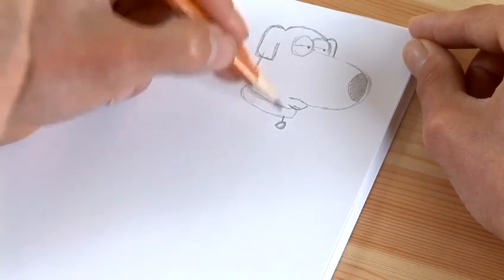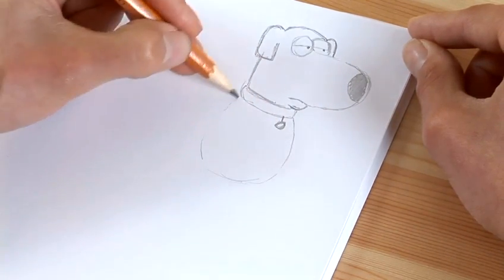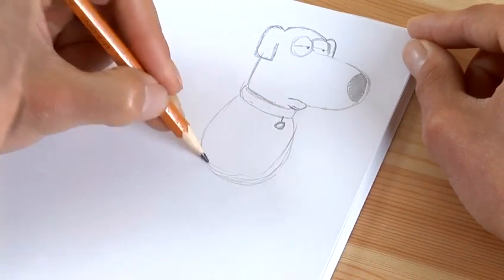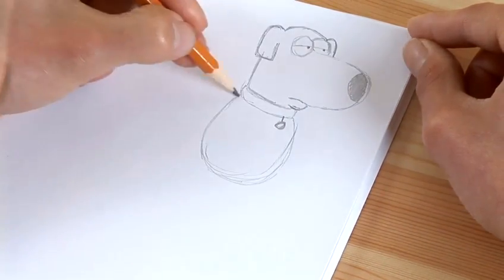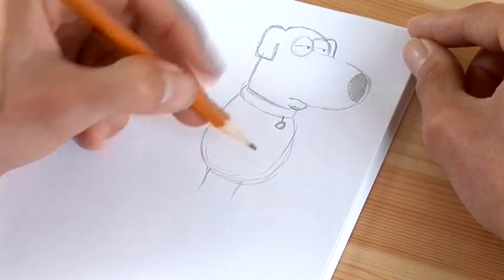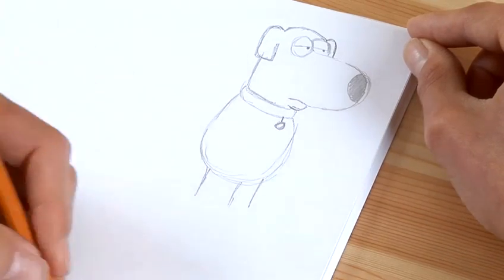Now for Brian's body it's probably easiest if you do sort of like a circular type shape here. Thicken it up a little bit. That's going to represent his main part of his body and his legs. If you do just a couple of lines coming down off of the circle. That's his body.